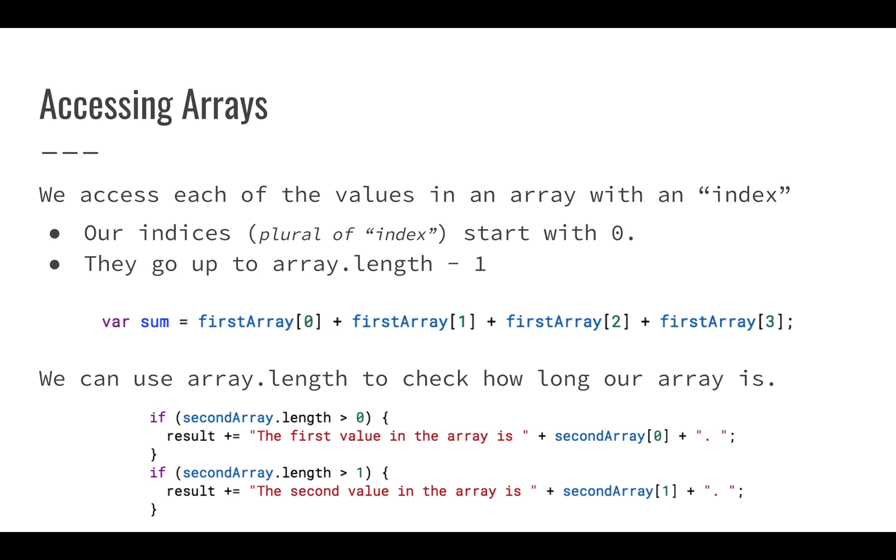But you can see how it starts with zero and goes all the way up to array.length minus one. So if our array was 2, 3, 4, 5, that would be two plus three plus four plus five, which would be two plus three is five plus four is nine plus five is 14.